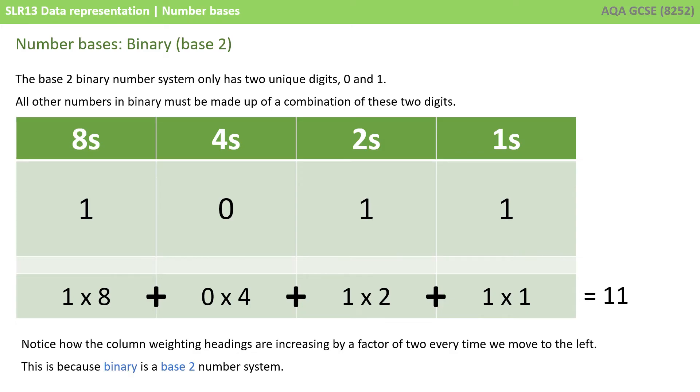The binary number 1011 is 11 in decimal. And again, just to reiterate, the weighting of the column headings is multiplying by 2 every time we move to the left, because binary is a base 2 number system.